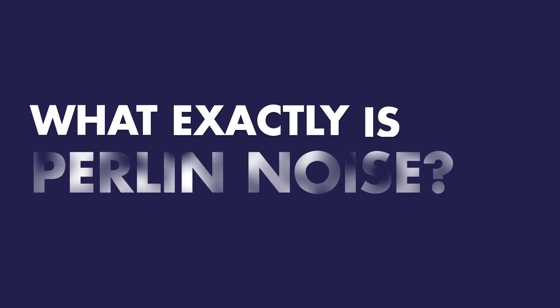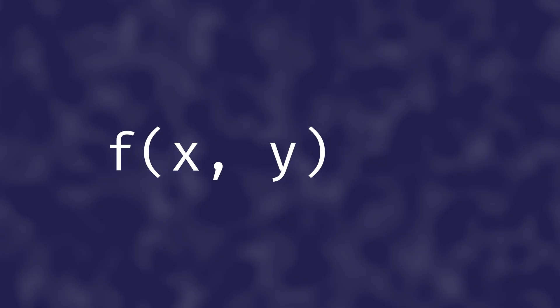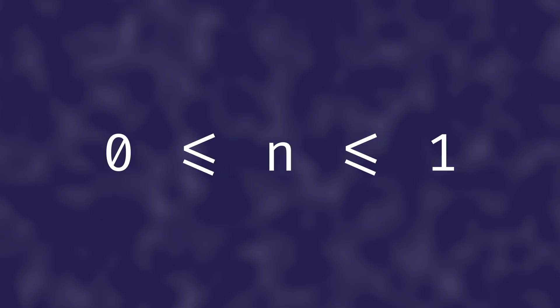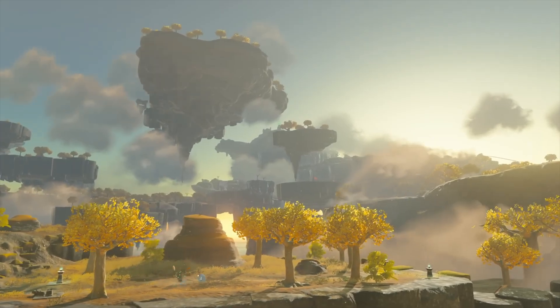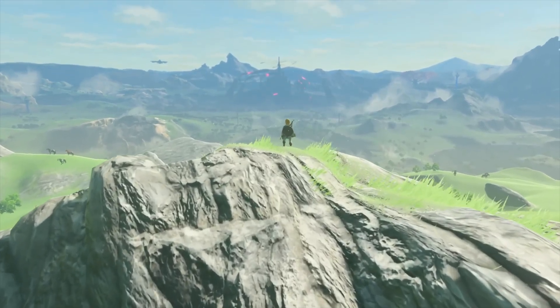So what exactly is Perlin Noise? At its core, it's just a function. You give it one or more numbers as input — a position in space — and it gives you back another number. Technically the output goes from negative 1 to 1, but in most visual applications it scales to a range between 0 and 1: black to white, with shades of grey in between. But here's the trick: nearby inputs produce similar outputs. It creates patterns with just the right balance of order and chaos — unpredictable but smooth, random but structured.